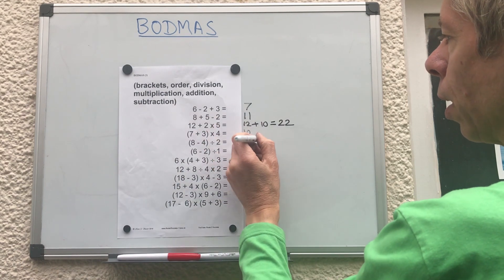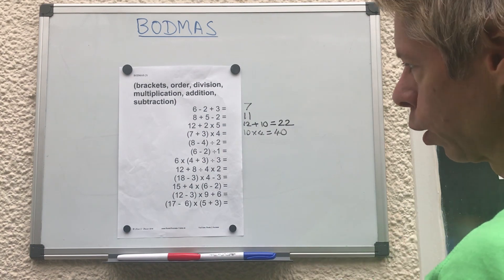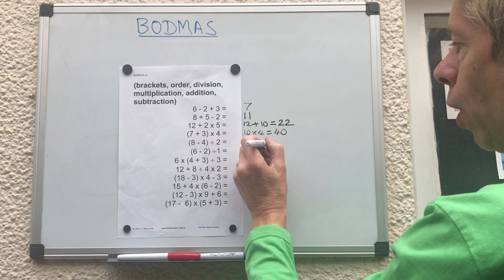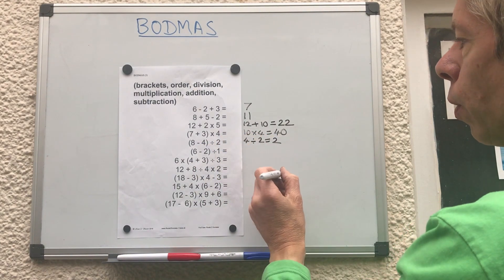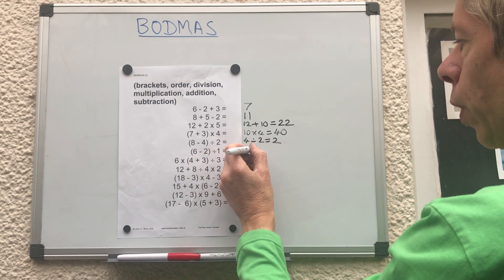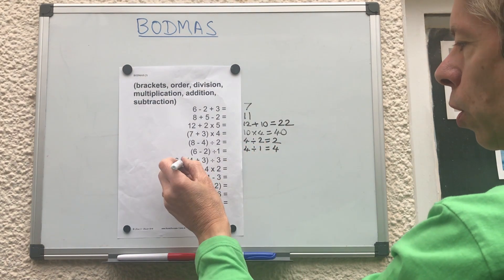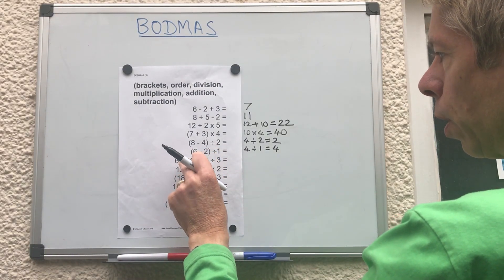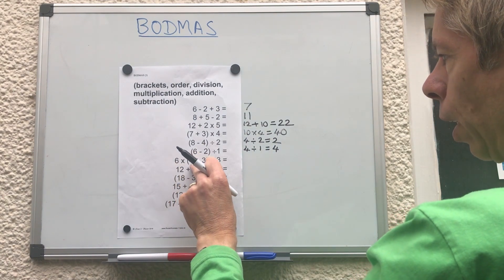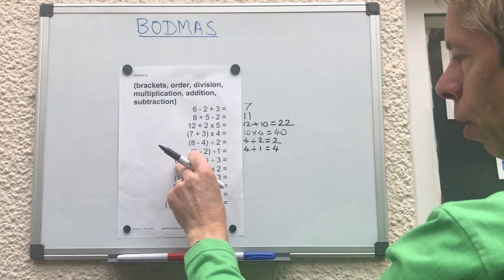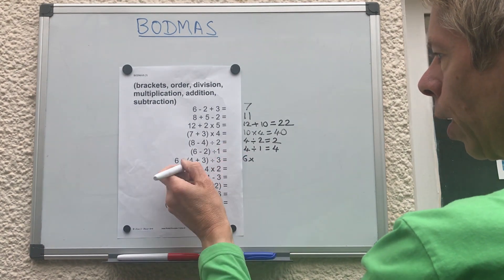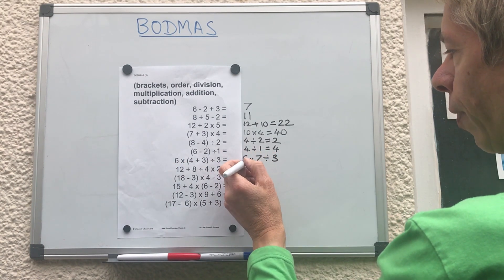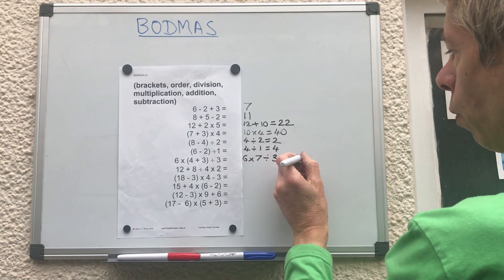Next we have a bracket: seven plus three in brackets, times four — so seven plus three is ten, times four gives forty. Another bracket: eight take away four in brackets, divide by two — eight minus four is four, divided by two gives two. Then six take away two in brackets, divide by one — six minus two is four, divided by one gives four. The next one looks complicated: six multiplied by the bracket four plus three — that gives seven — then divide the answer by three. So six times seven is forty-two, divided by three gives fourteen.